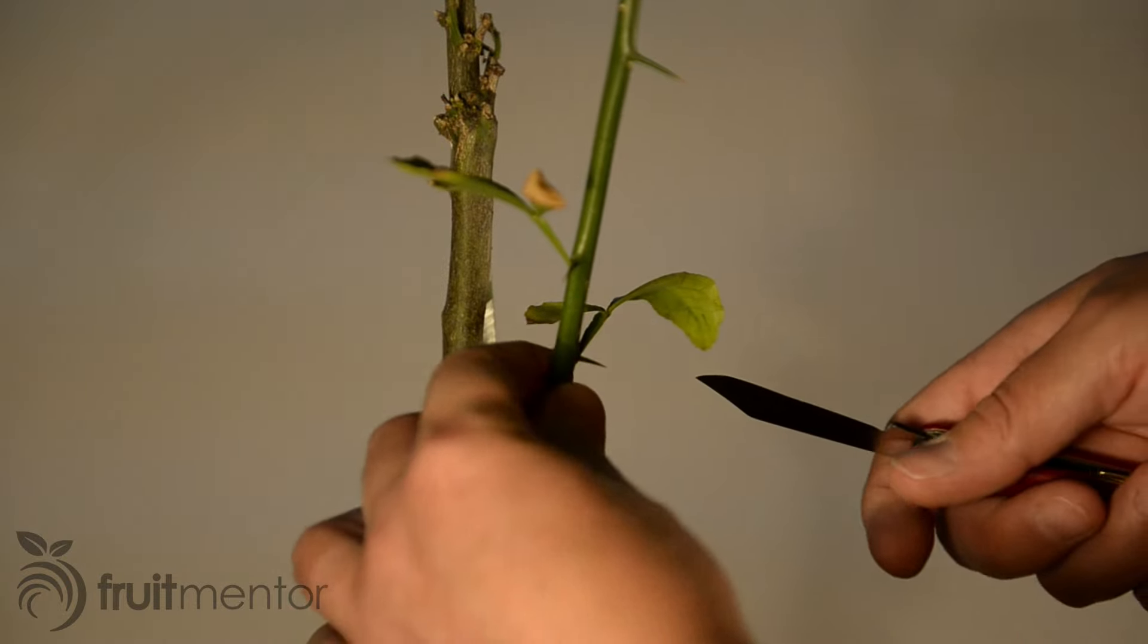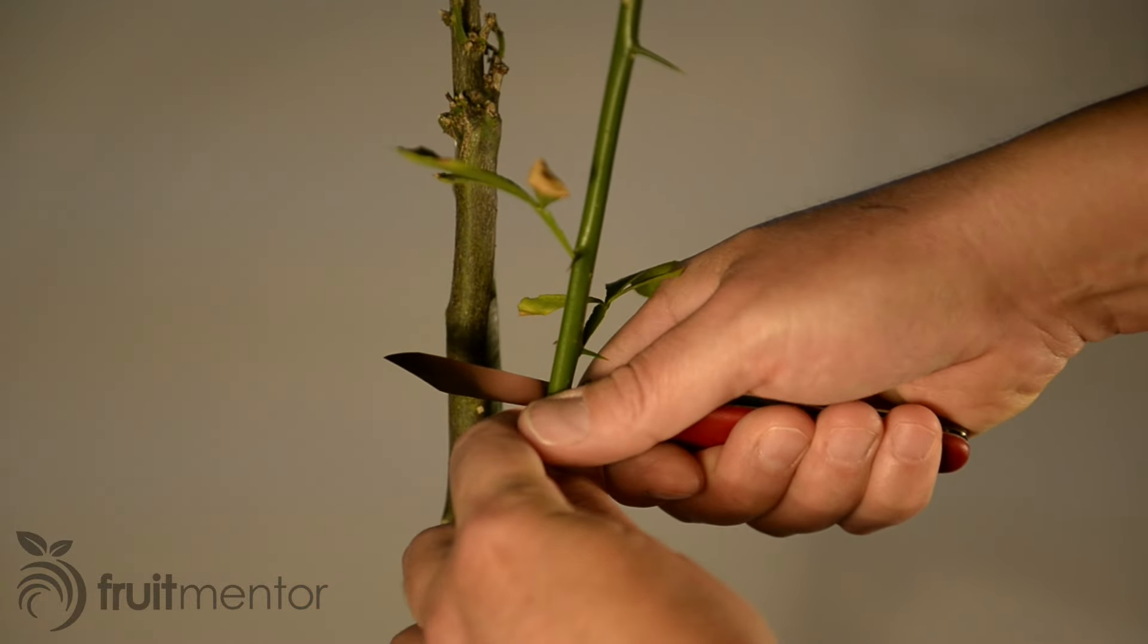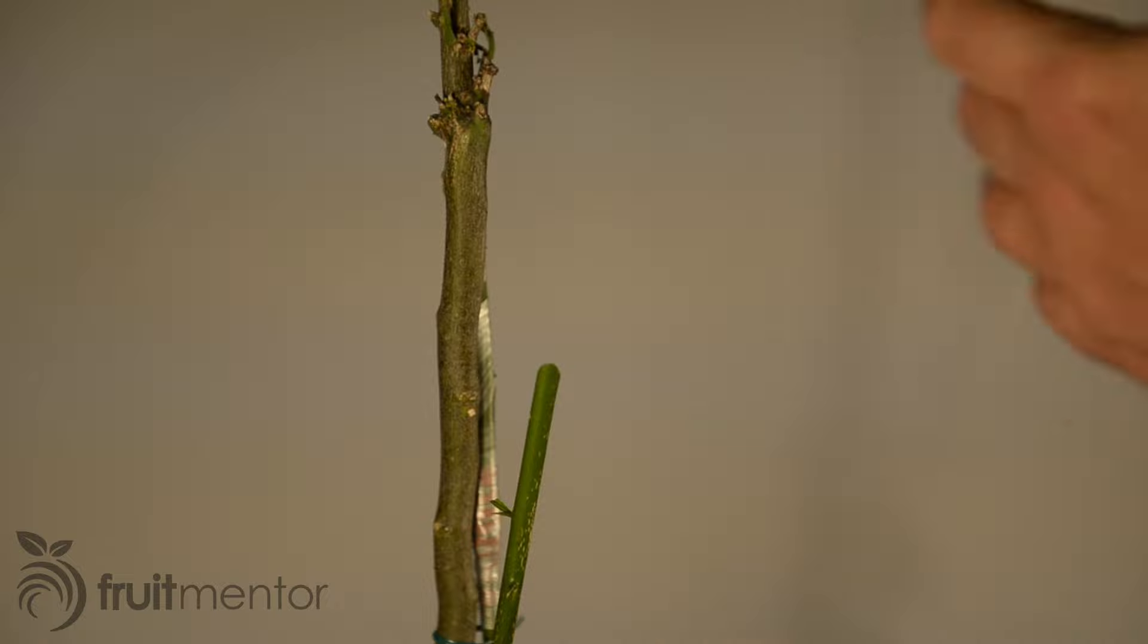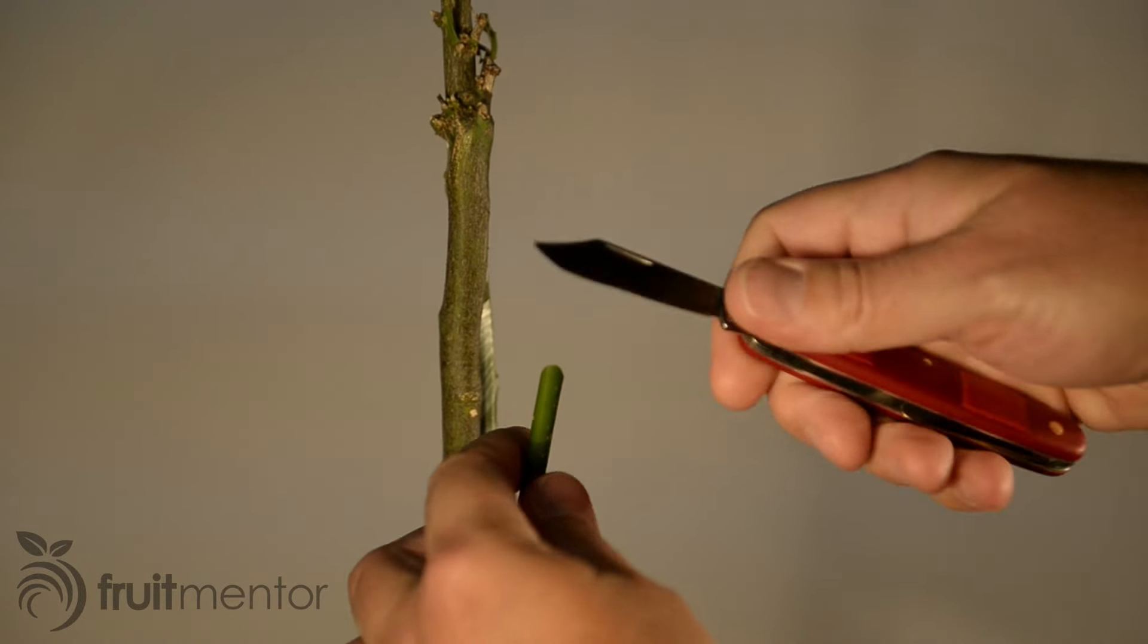In order to improve my chances of success, I will graft a second scion to the rootstock. This way I will succeed even if one of the grafts fails.